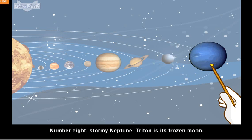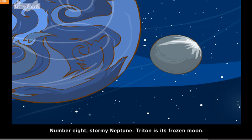Number eight, stormy Neptune. Triton is its frozen moon.